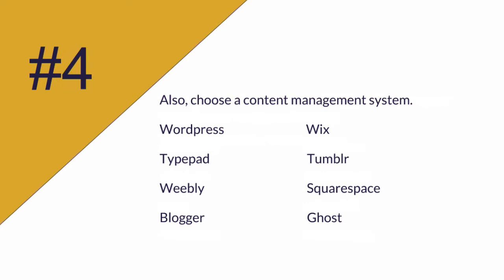When it comes to choosing a domain and hosting, once you get that squared away, you want to make sure you also choose a content management system that works for you. Here are a few examples: WordPress, of course, is everybody knows — it's top dog. But there's also TypePad, Weebly, Blogger, Wix, Tumblr, Squarespace, and Ghost.